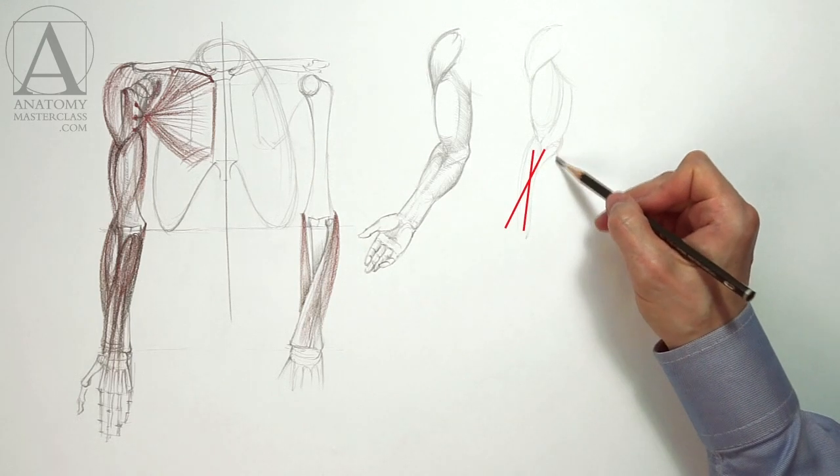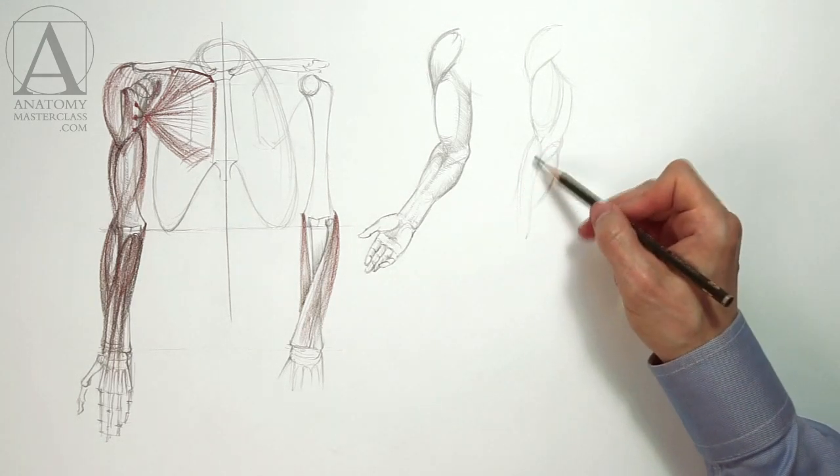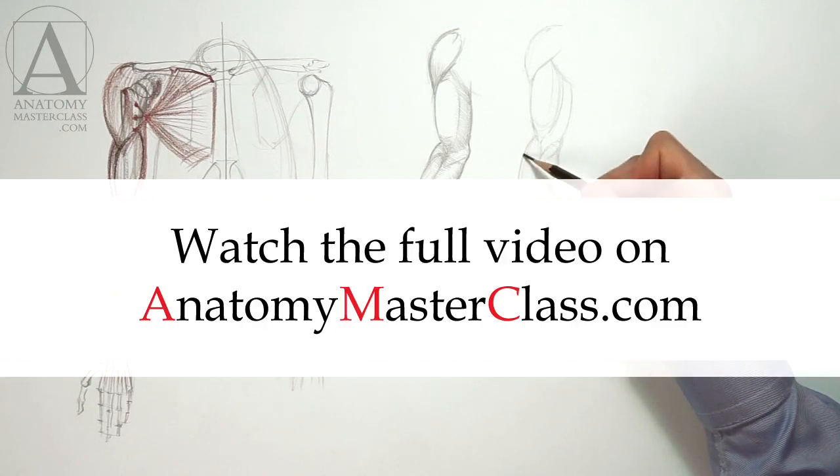In this position, the radius crosses the ulna, forming an X shape. This influences the appearance of the lower arm muscles.